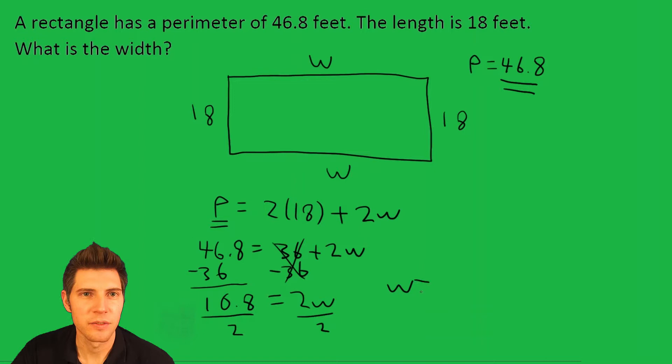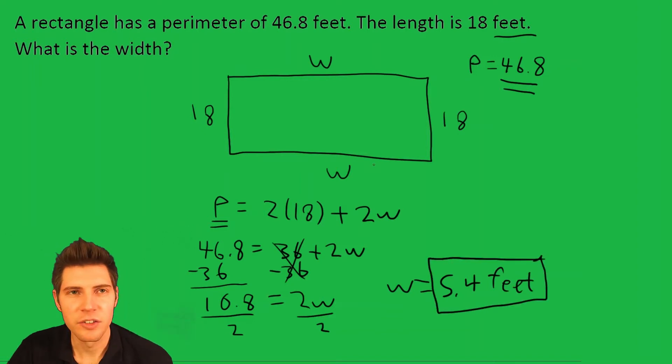10.8 divided by 2 is 5.4, and the label is feet. So we're going to say 5.4 feet. That's the answer to the question. Each of these two sides would have to be 5.4 feet in order for us to have a total perimeter of 46.8.